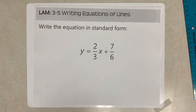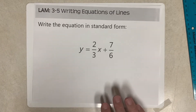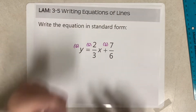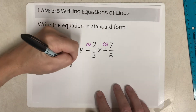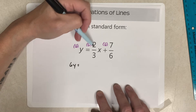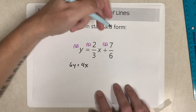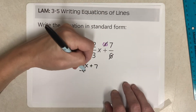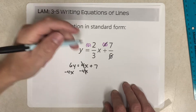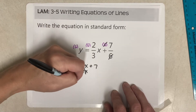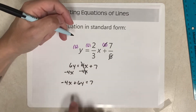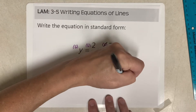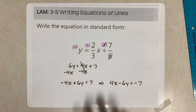Last conversion to standard form: multiply everything by 6 to clear denominators, giving 6y equals 4x plus 7. Subtract 4x from both sides: negative 4x plus 6y equals 7. Since A must be positive, change all signs: 4x minus 6y equals negative 7. That's the final answer.